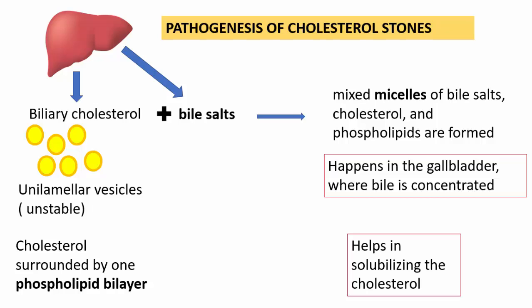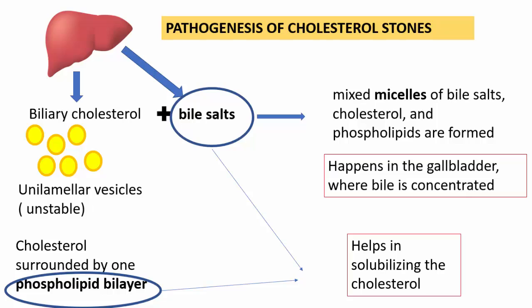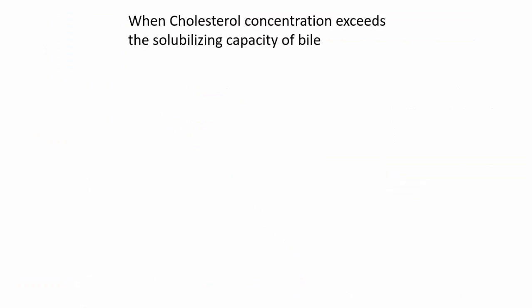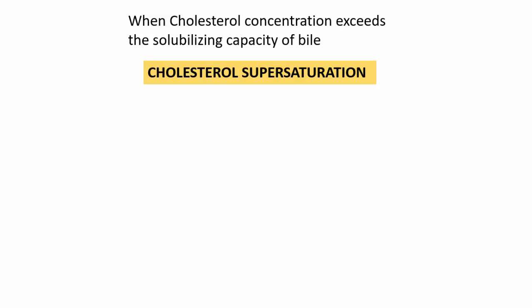This is the mechanism which helps cholesterol to solubilize. Phospholipids and bile salts together are the most important components that render cholesterol soluble. Now, whenever there is increased concentration of cholesterol or decreased synthesis of bile salts, cholesterol exceeds the solubilizing capacity of bile. This condition is referred to as cholesterol supersaturation — the most important mechanism in the formation of lithogenic bile, meaning stone-forming bile.